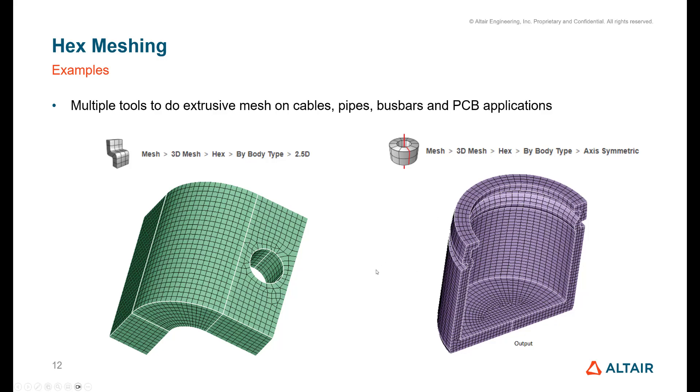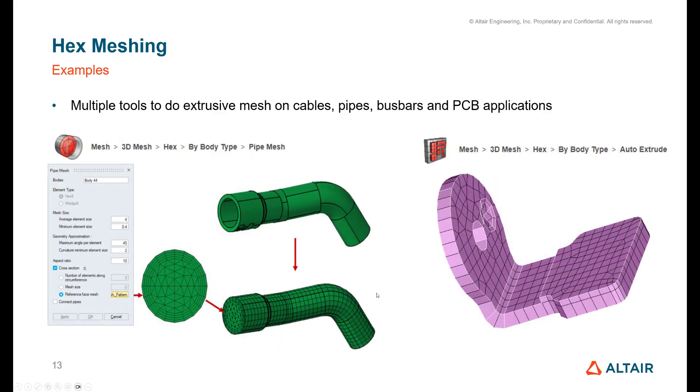You have tools like pipe meshing, so pipe mesh could be something applied on cables for example. You can mesh the starting face and then it will propagate and follow the shape of the CAD nicely. That can be very powerful. Then we have a lot of tools which are automatically doing extrusion and hex meshing, so this can be applied very nicely on a lot of busbar applications quickly.